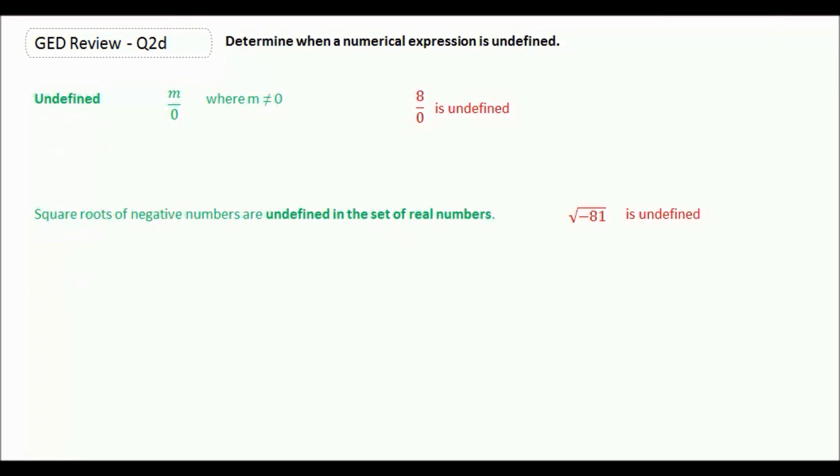Now certain numbers are undefined in certain sets. So square roots of negative numbers are undefined in the set of real numbers. You can't have a square root of a negative number because a negative times a negative will give you a positive, not a negative number.